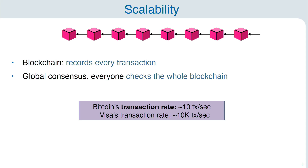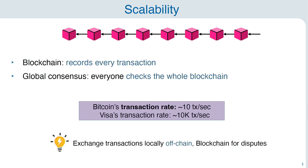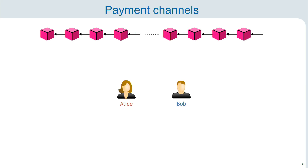For instance, Visa can handle tens of thousands of transactions per second. So what can we do? There are many ideas. One of them is off-chain solutions. The main idea is: let's not commit every transaction on the blockchain. If we're two parties that want to do some payments, we do some payments off-chain. We keep them locally and we use the blockchain as a fallback mechanism in case there is a dispute.